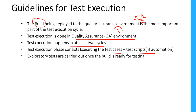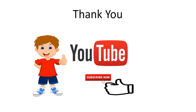As part of the test execution phase, we need to include our manual test cases along with automation test cases. Exploratory tests are carried out once the build is ready for testing. Once the build is ready, we first do the exploratory testing, then sanity testing, and then continue with functional testing. Those are the guidelines for test execution. That's all for this video — thanks for watching, please subscribe to my channel to get more updates.